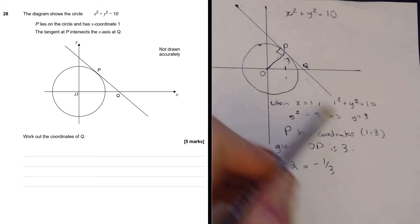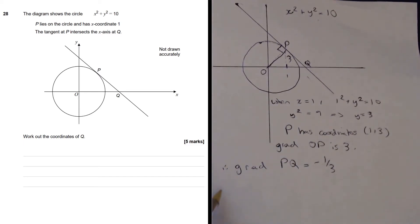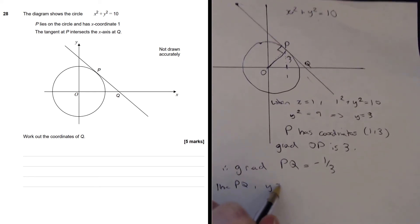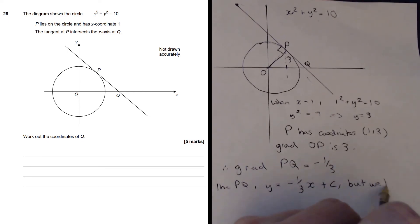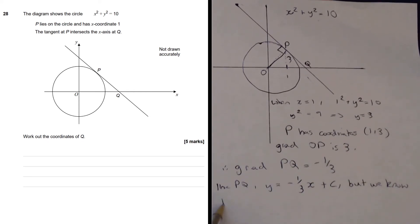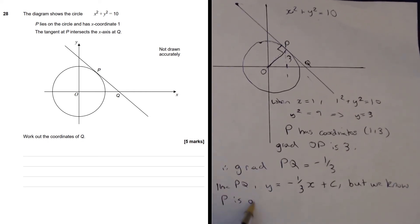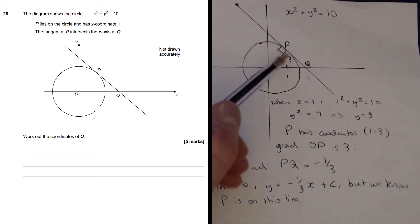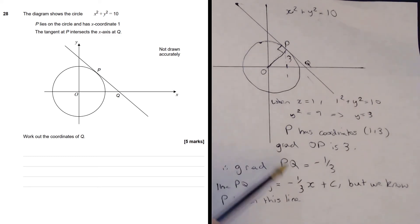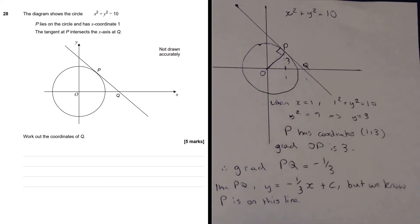So let's come up with a general equation for this line. So line PQ, we're going to have y equals minus 1 third x, we know the gradient, plus C. But we know P is on this line. So we can use the coordinates to find out what the intercept C is.